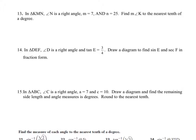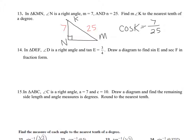For number 13, in triangle KMN, N is a right angle. Lowercase m is 7 and lowercase n is 25. To find angle K, you have the adjacent side and the hypotenuse, so use cosine. Cosine of angle K equals 7 over 25. Make sure your calculator is in degree mode since they're asking for the nearest degree. Cosine inverse of 7 over 25 gives roughly 73.7 degrees.